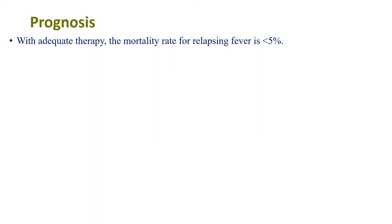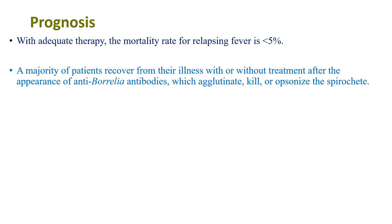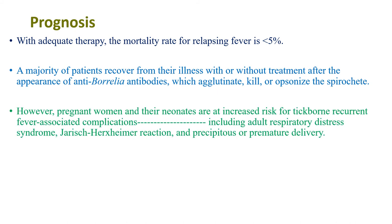Regarding prognosis, with adequate therapy the mortality rate of relapsing fever is less than 5%. A majority of patients recover from their illness with or without treatment after the appearance of anti-Borrelia antibodies, which agglutinate, kill, or opsonize the spirochetes. However, pregnant women and their neonates are at increased risk for tick-borne recurrent fever-associated complications, including adult respiratory distress syndrome, JHR, and precipitous or premature delivery.